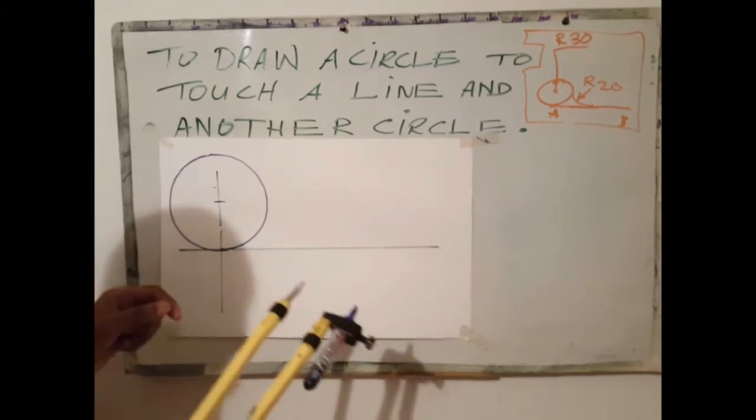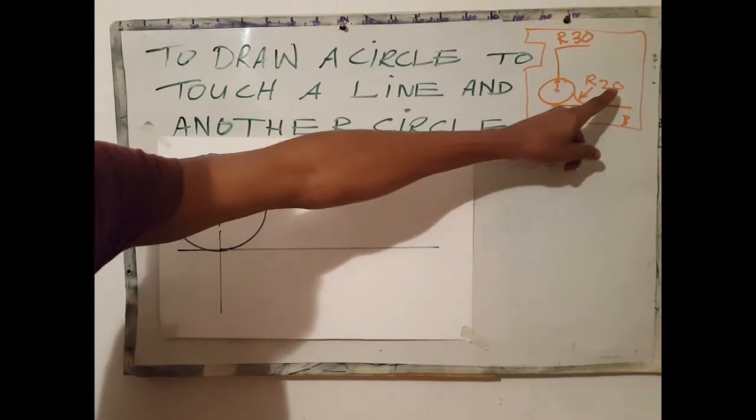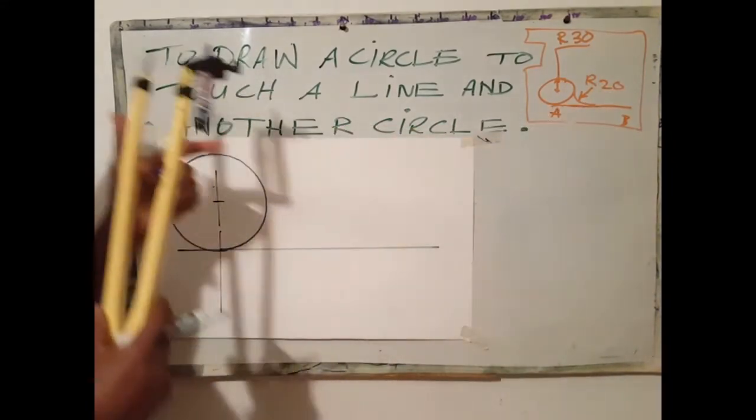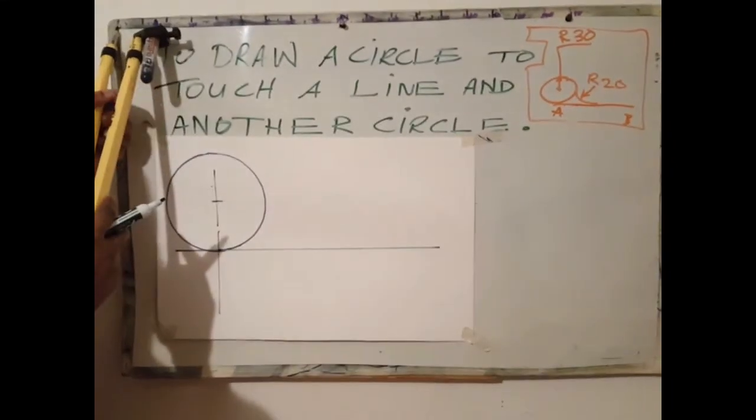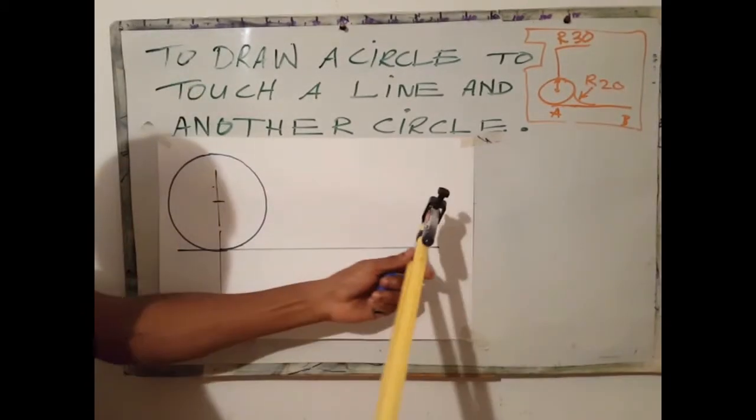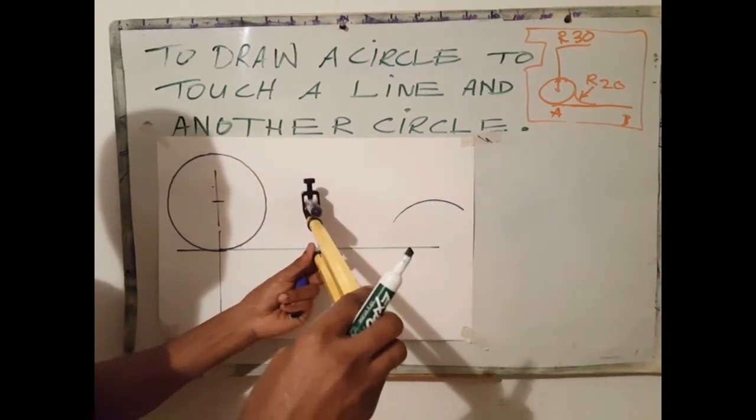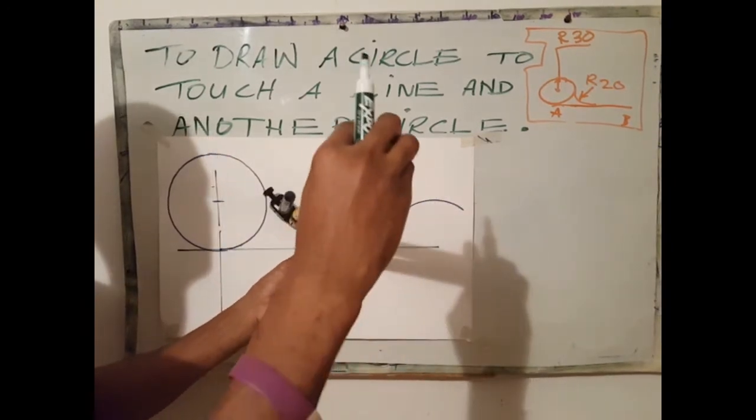The next step is to draw a parallel line to the horizontal line at 20 millimeters apart. Draw a circle at any two points, first arc, second arc.